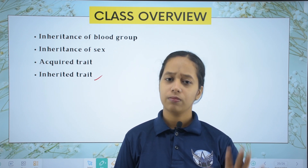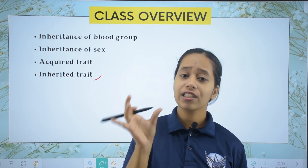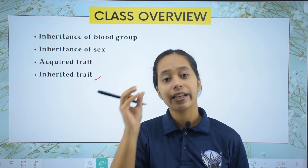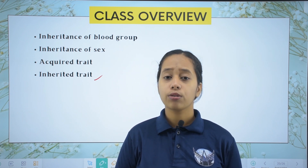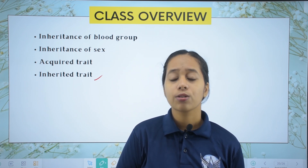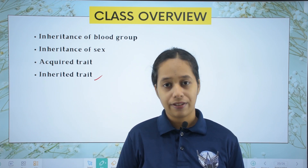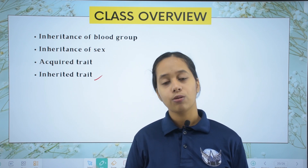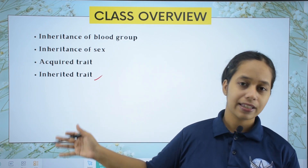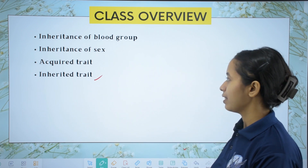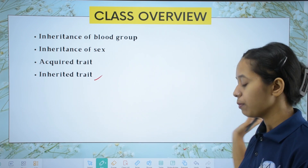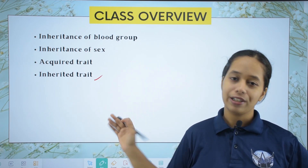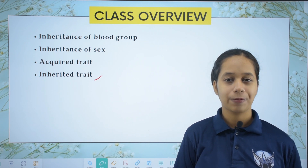For example, your father is very good at maths, your mother is very good at science, but you do not like maths and do not like science. Instead you are very good at sports. This trait did not come from your father or your mother — you acquired it yourself in your lifetime through practice and interest. Traits that you gain in your lifetime are known as acquired traits.